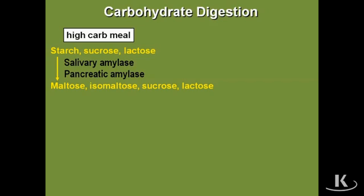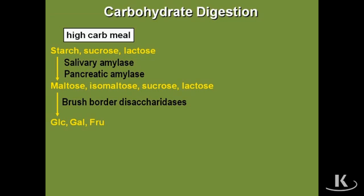In the lumen of the intestine, there are a series of brush border disaccharidases — maltase, isomaltase, sucrase, and lactase — that break the disaccharides down to monosaccharides. At this stage, primarily the monosaccharide is glucose. Over 99% of the monosaccharides generated in the lumen of the intestine is glucose, with very little galactose and very little fructose, present because of the sucrose and lactose in the meal.